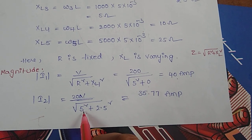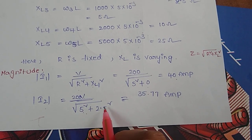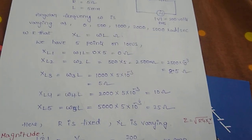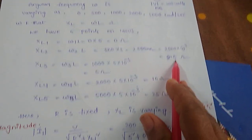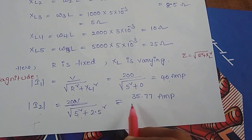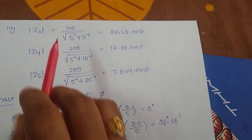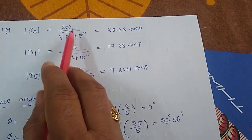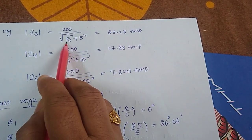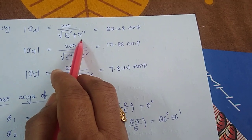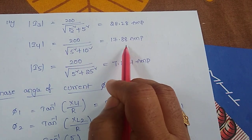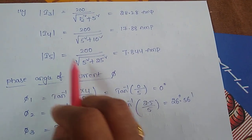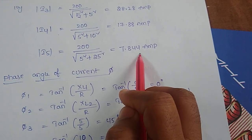Similarly I2 equals V by Z, so V is 200, Z value is square root of R squared plus XL2 squared. For that I got I2 value is 35.77, then similarly I3 is 28.28, I4 value is 17.88, and I5 value is 7.844.